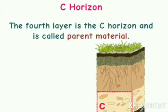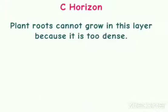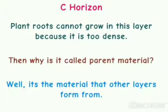C horizon. The fourth layer is the C horizon and is called parent material. It does not have many nutrients and is mostly broken up rocks. Plant roots cannot grow in this layer because it is too dense. But why is it called parent material? Well, it is the material that the other layers form from.